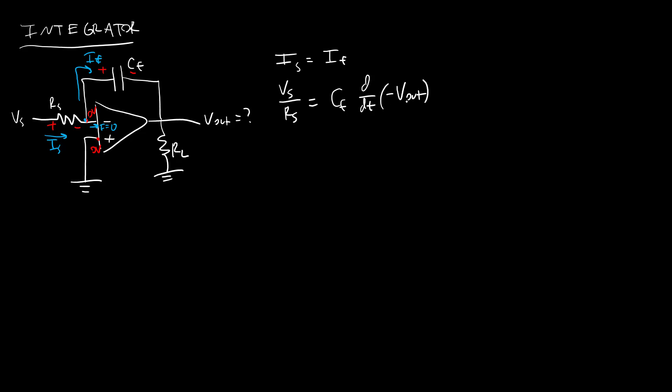I want to get Vout as a function of Vs, so now I'm going to wind up taking the integral of this whole thing to get rid of the d dt in front of Vout. And when I do that, I get Vout equals negative 1 over CSRF integral Vs dt. And that is why this is called an integrator instead of a differentiator, where again, I have a scale factor out front that also has a minus 1, but now I am integrating the value of Vs instead of taking the derivative of it.